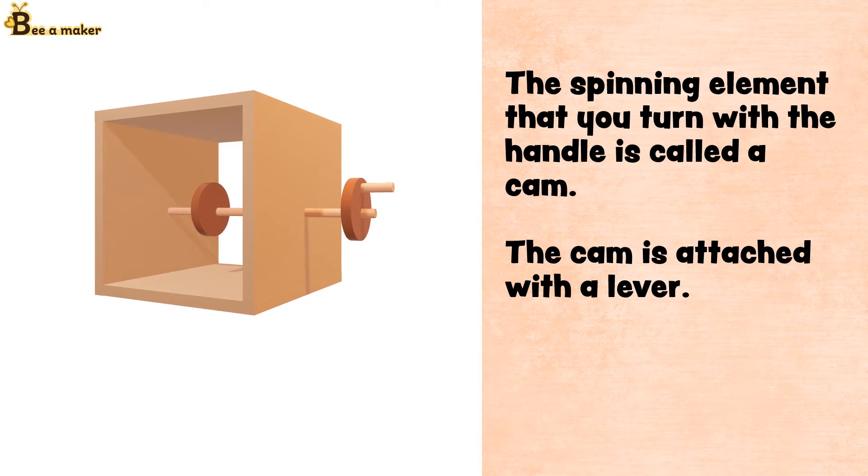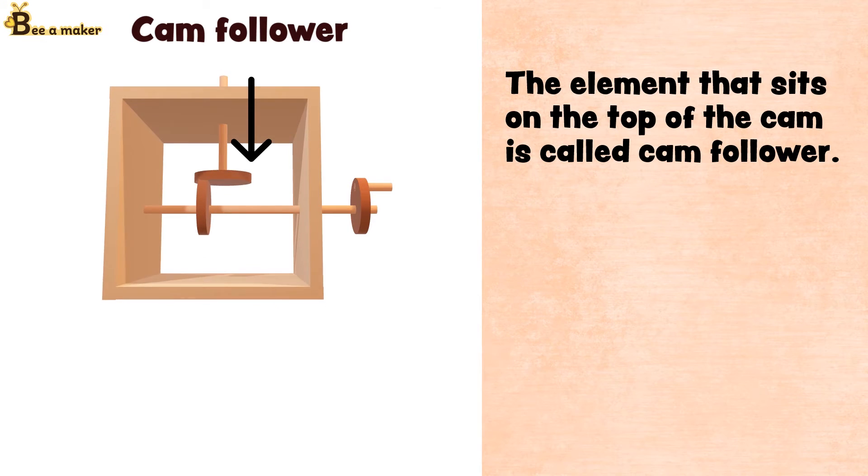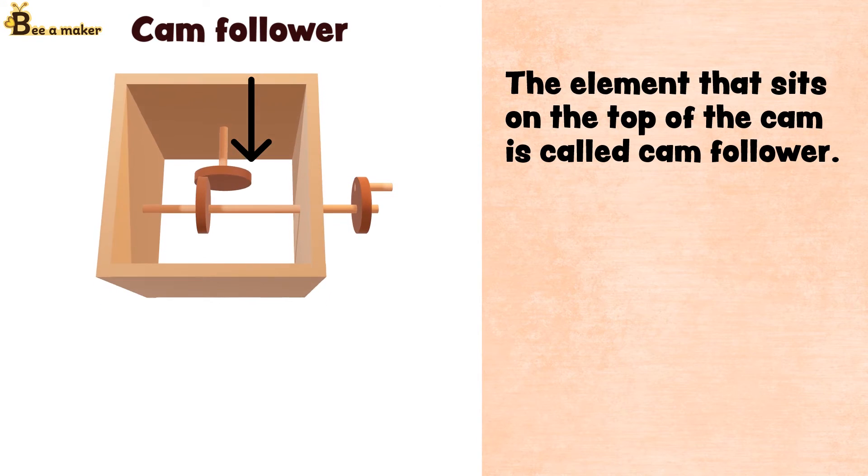The spinning element that you turn with the handle is called a cam. The cam is attached with a lever. The element that sits on the top of the cam is called a cam follower.